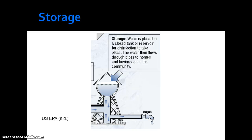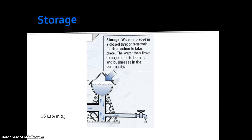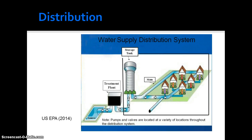Finally, after treatment, water is held in a closed tank or reservoir for disinfection to take place, and to maintain a specific volume on hand at all times, depending on the size of the receiving community. As needed, the water then flows through pipes to homes and other users, such as businesses in the community. Leaks in the distribution system can be costly.